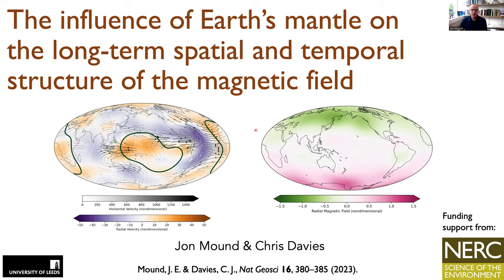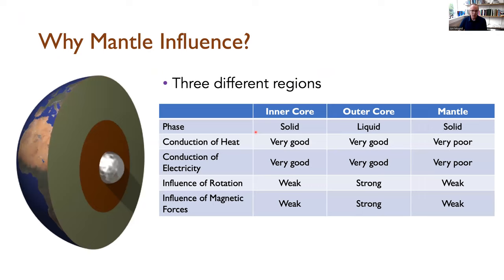What we've been looking at is whether and how the Earth's mantle and convection in the Earth's mantle might influence dynamics in the Earth's core, and hence the observable magnetic field of the Earth on long time scales. There are different ways you might come to ask this question. I'm going to come at it from a geodynamics point of view, because that's mainly where my background lies. So, a quick reminder of the dynamical differences of the Earth in broad scale.